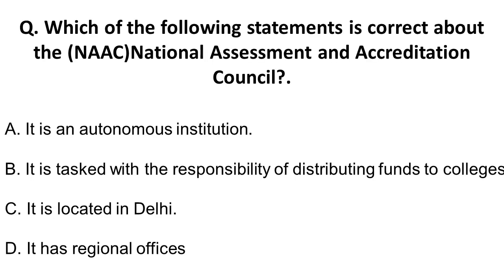The next question is: which of the following statements is correct about NAAC — National Assessment and Accreditation Council? Option A: it is an autonomous institution. Option B: it is tasked with distributing funds to colleges. Option C: it is located in Delhi. Option D: it has regional offices. Option B is eliminated because UGC handles fund distribution. Its headquarter is in Bangalore, not Delhi, and it has no regional offices — only one office in Bangalore. The correct answer is option A: it is an autonomous institution, and it is under the UGC.